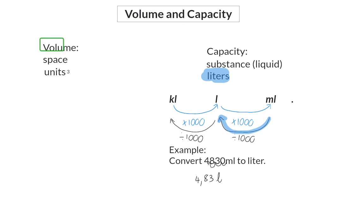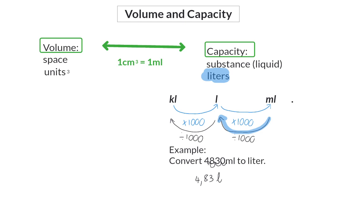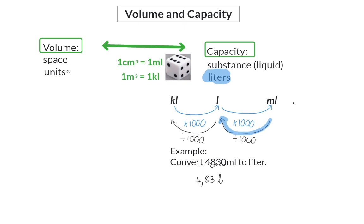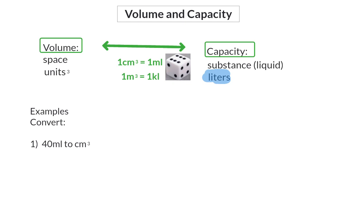Because both volume and capacity describe what you can hold inside a three-dimensional shape, you should also be able to convert between the two. You need to know that one cubic centimeter equals one milliliter of liquid — one cubic centimeter is roughly the size of a normal dice. Example 1: Convert 40 milliliters to cubic centimeters. Since one milliliter equals one cubic centimeter, 40 milliliters is also 40 centimeters cubed.